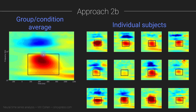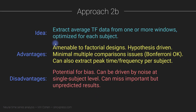Here's another example of this procedure. A group-level time-frequency region of interest is defined which is fairly large, and then for each individual subject you can see that group window in gray. The specific boundaries for each individual's region of interest are then optimized for that particular individual's theta burst, so the window can move around slightly for different individuals. The idea of Approach 2B is to extract time-frequency data from one or more windows, optimized per subject but constrained at the group level. Like 2A, this is amenable to factorial designs and hypothesis-driven. You can also extract peak time and frequency per subject in case that's meaningful individual variability.